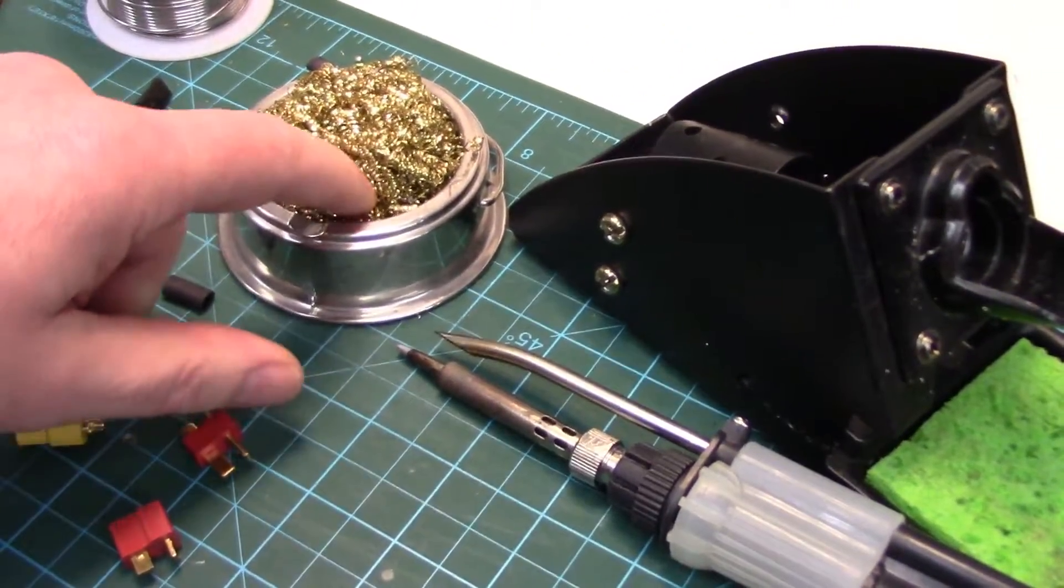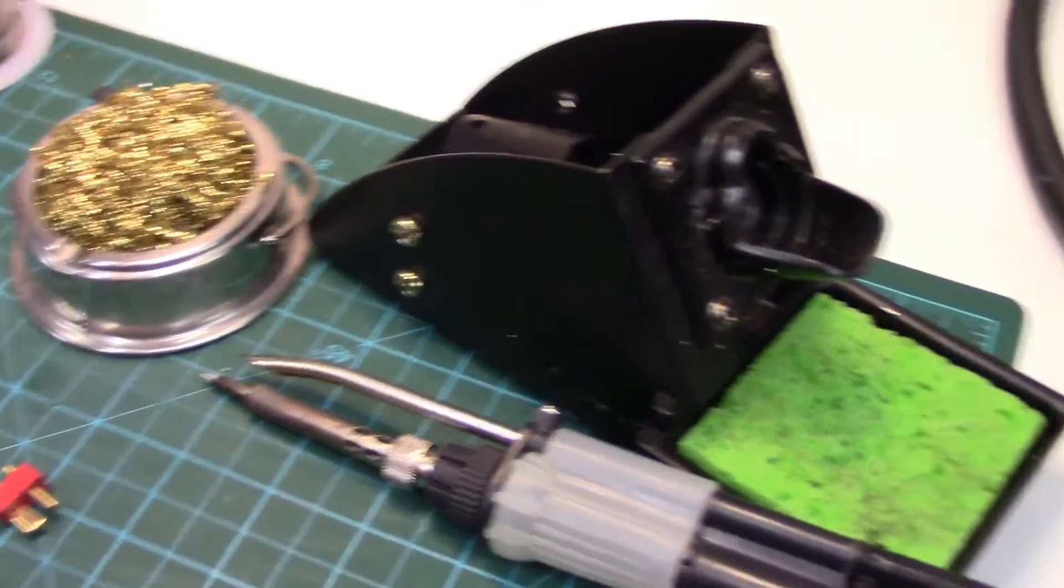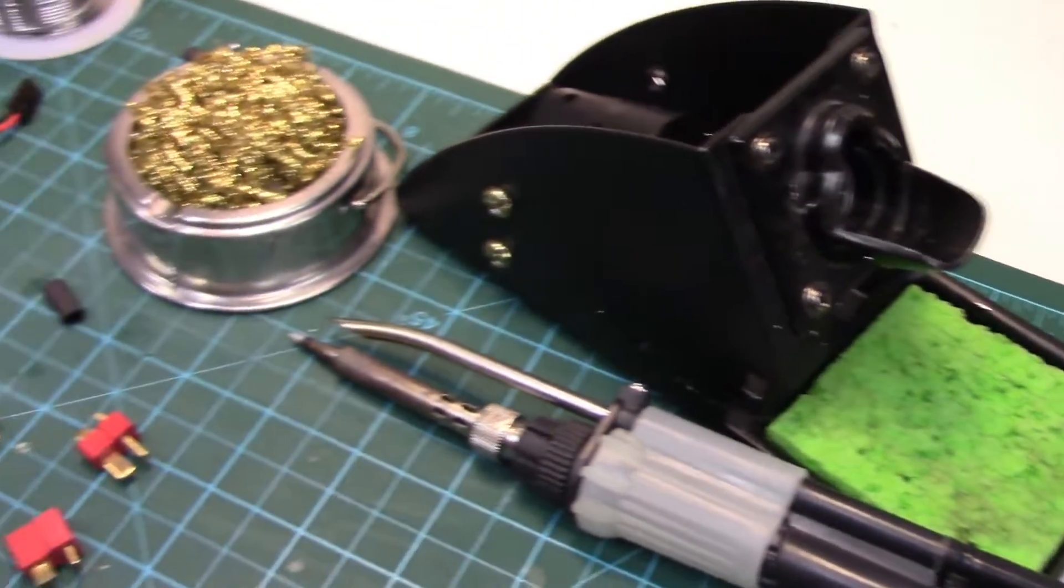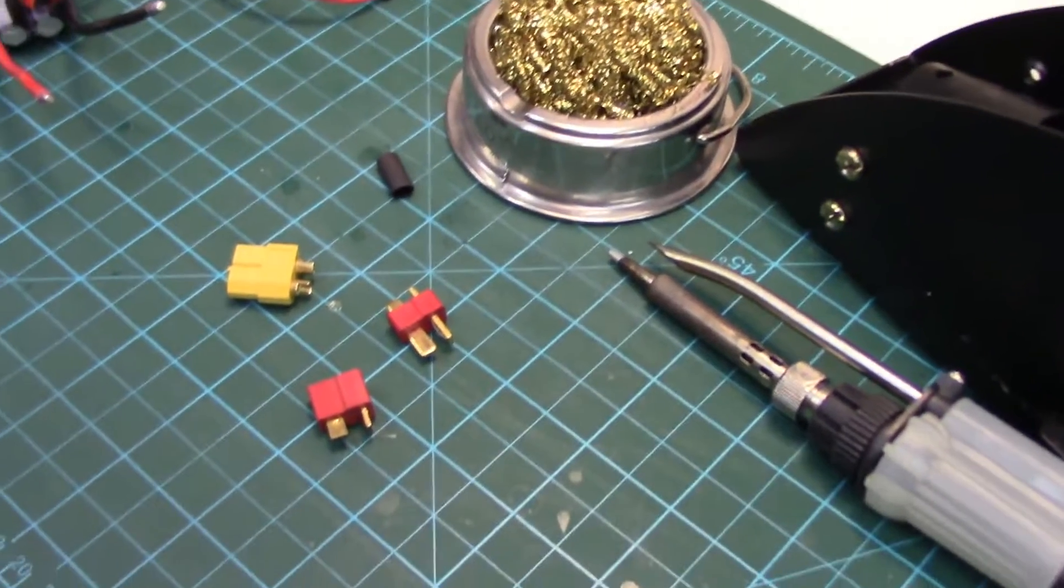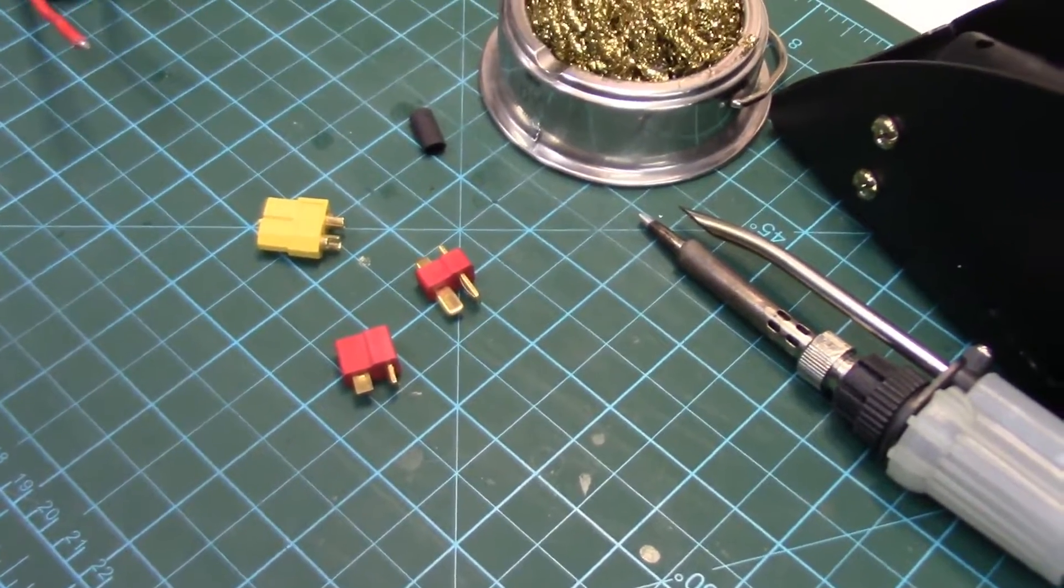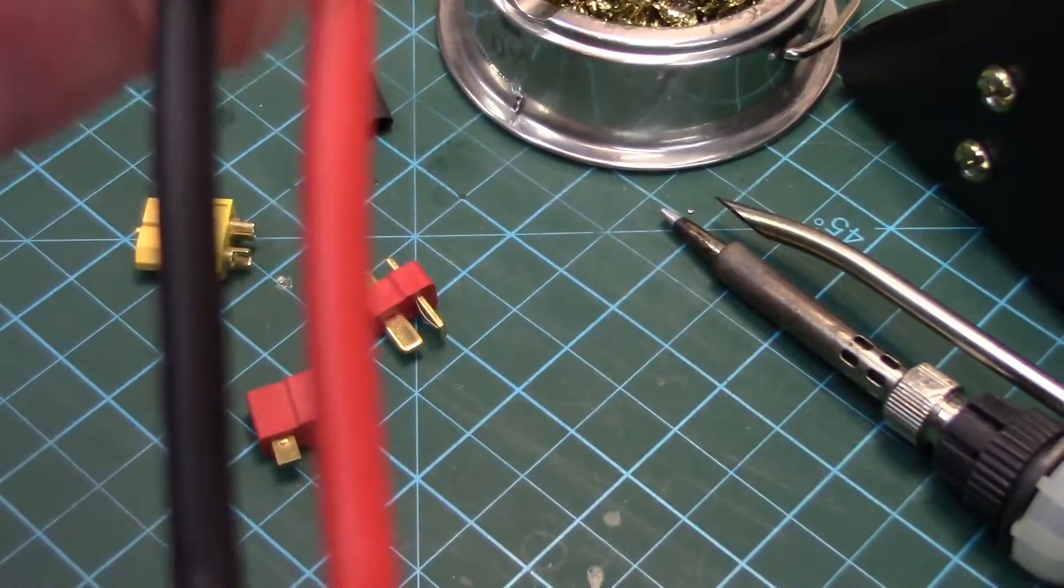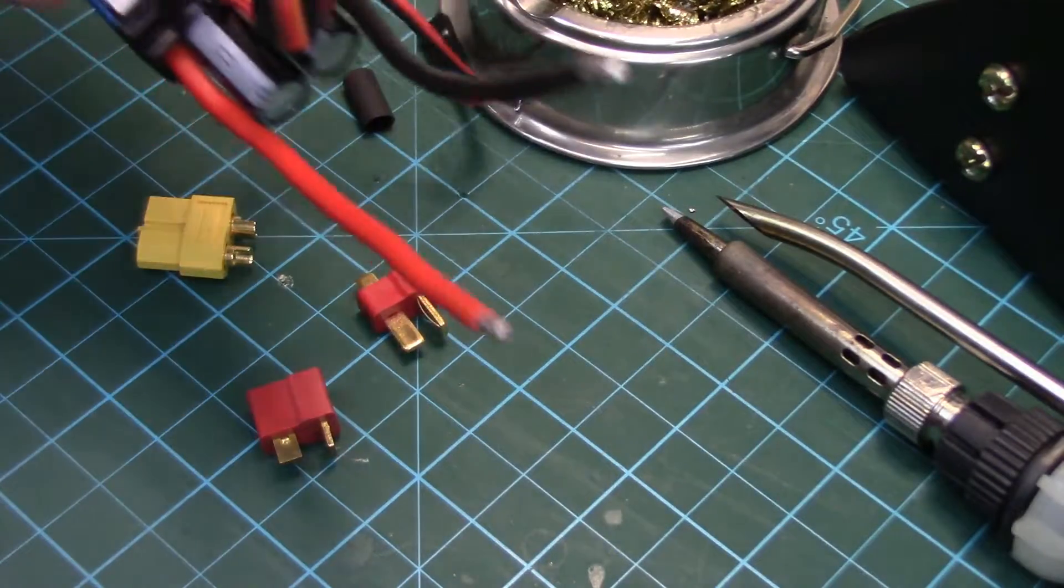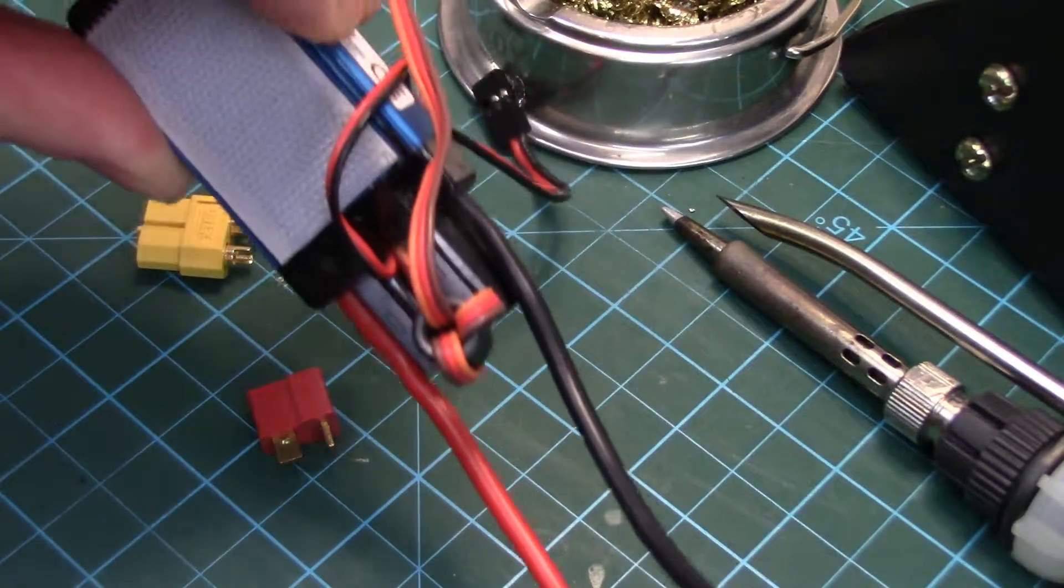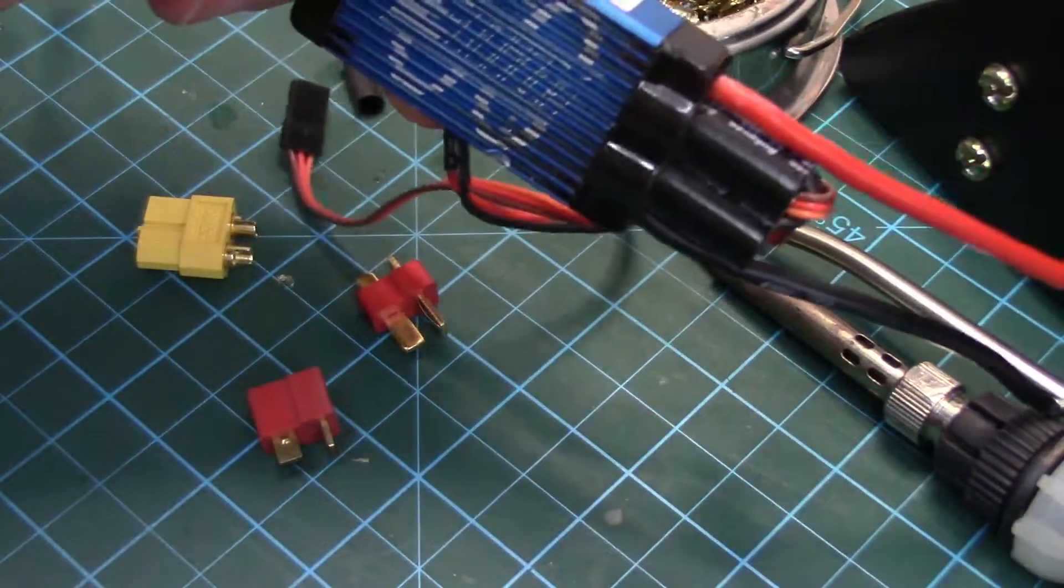We've got a solder tip cleaner here, just the brass shaving type or if you want to use a damp sponge and then of course you're going to need your wire that you're soldering. In this case I'm going to be soldering one of these connectors to an ESC.